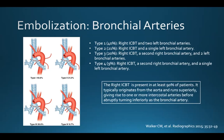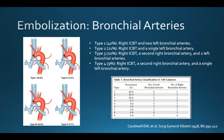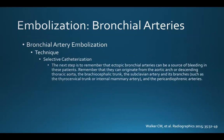So you can see that a right intercostal bronchial trunk is present in at least 90% of patients. It typically originates from the aorta and runs superiorly, giving rise to one or more intercostal arteries before abruptly turning inferiorly as the bronchial artery. This table presents the last five types of bronchial arteries identified by Caldwell in his paper.